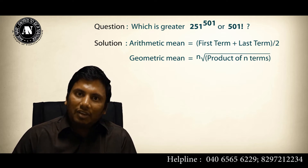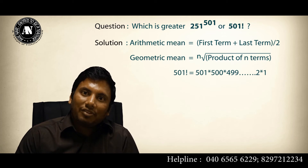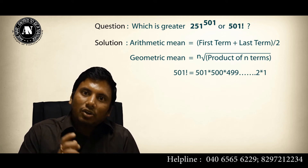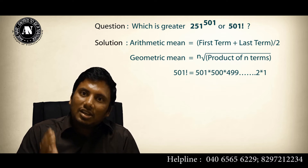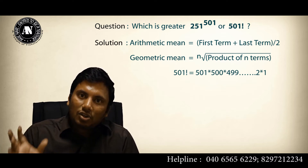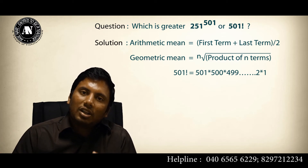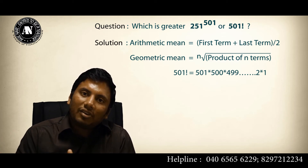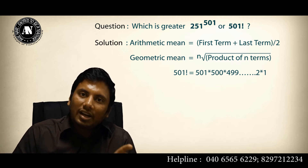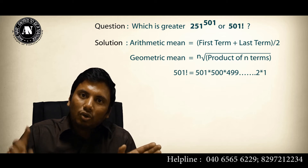Look at the question: 251 to the power 501 versus 501 factorial. By definition, factorial means multiply all the natural numbers starting from that number down to 1. So there is a product involved, and therefore I will use the geometric mean. The numbers in 501 factorial are 501, 500, and so on down to 1 — that is, all natural numbers from 1 to 501.